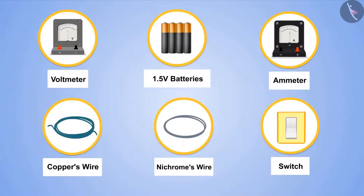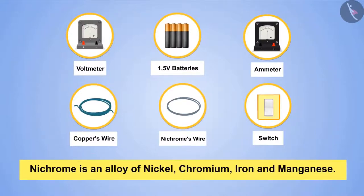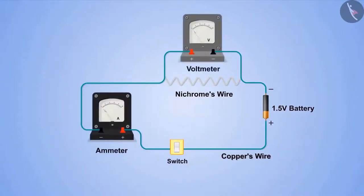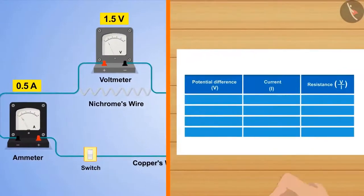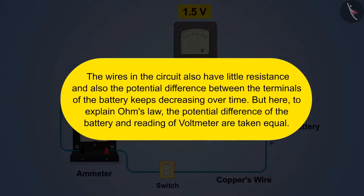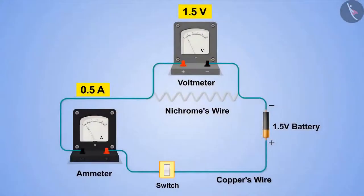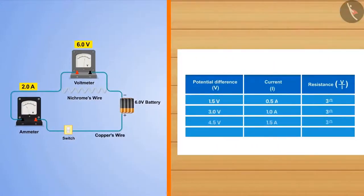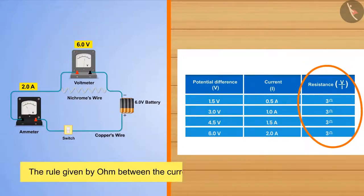We also need a switch and copper wires to connect the circuit. Nichrome is an alloy of nickel, chromium, iron, and manganese. Connect the circuit — the ammeter is connected in series and the voltmeter in parallel. After the circuit is complete, turn on the switch and write down the readings of the ammeter and voltmeter in the table. Note that wires in the circuit also have some resistance and the potential difference between battery terminals decreases over time, but here the battery's potential difference and the voltmeter reading are taken as equal. Do the same process four times, increasing one battery each time. If the ratio of potential difference and electric current is taken, they will always be the same — confirming Ohm's rule was correct.